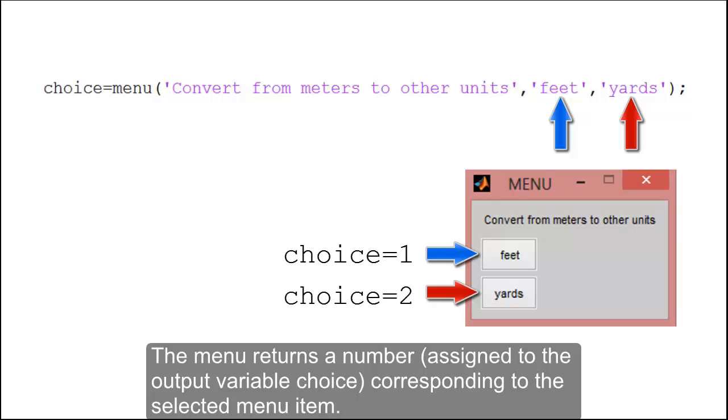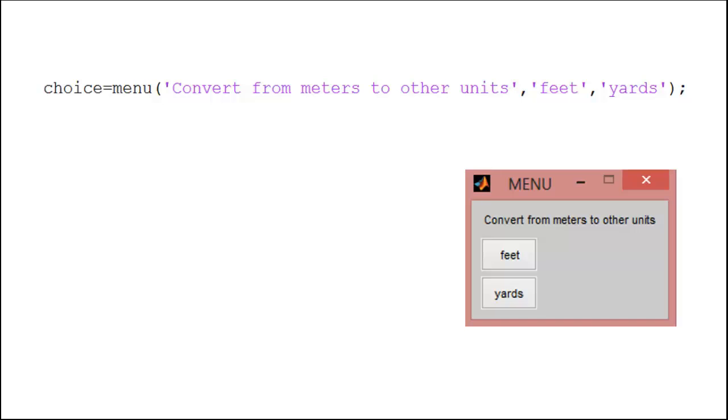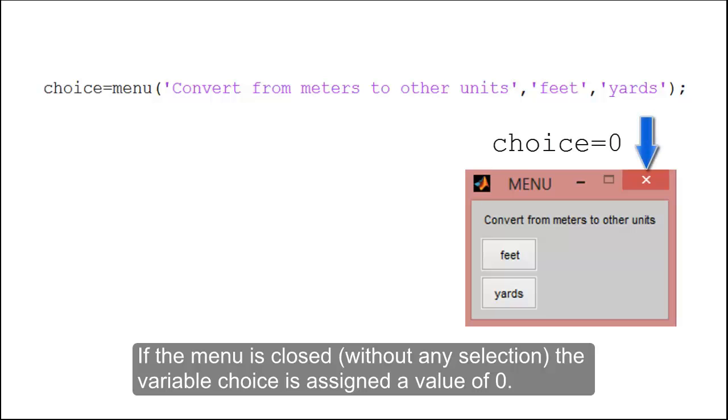The menu returns a number assigned to the output variable choice corresponding to the selected menu item. If the menu is closed without any selection, the variable choice is assigned a value of zero.